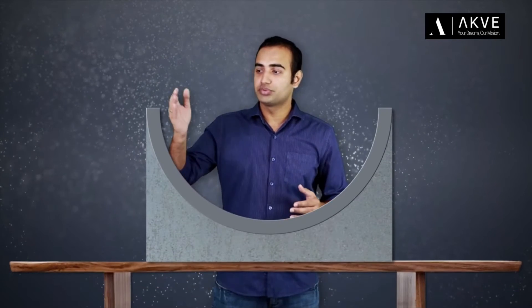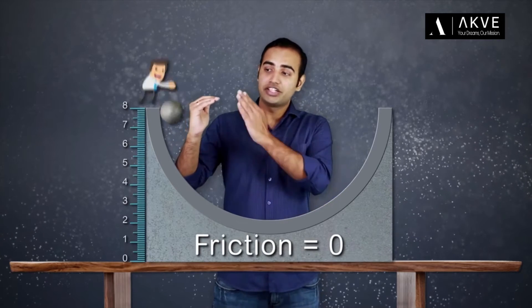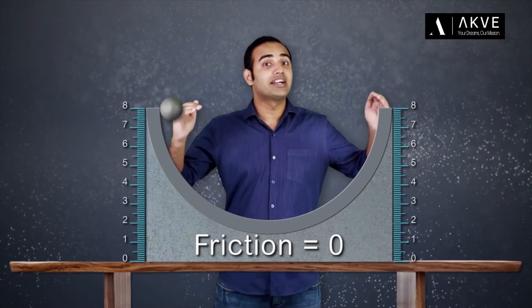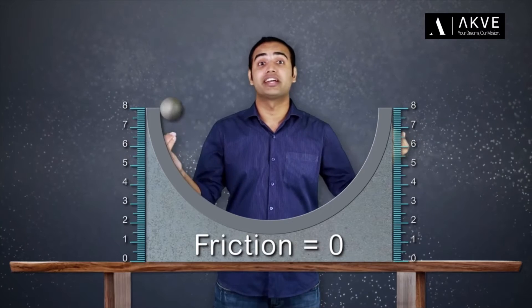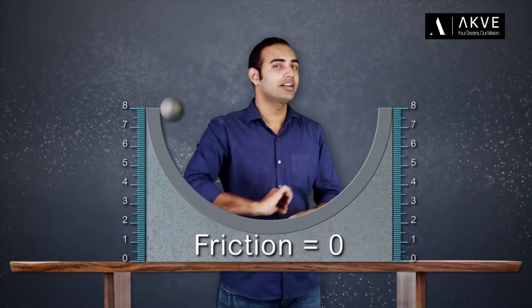He conducted another experiment and proved the same point, but this one is much more convincing. For that, he considered a smooth hemispherical structure and decided to release a ball inside it. He observed that once a ball is released from a certain height, it swings to the other side and attains the same height on the other side before stopping momentarily.